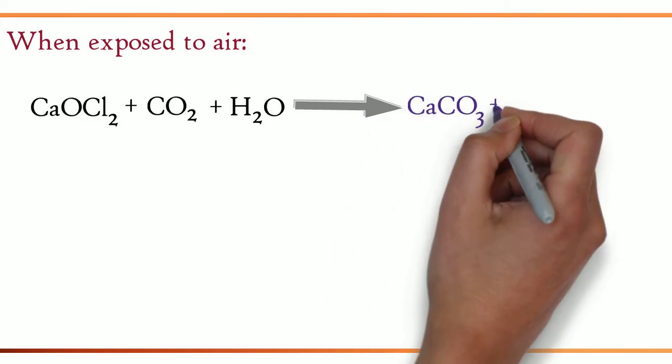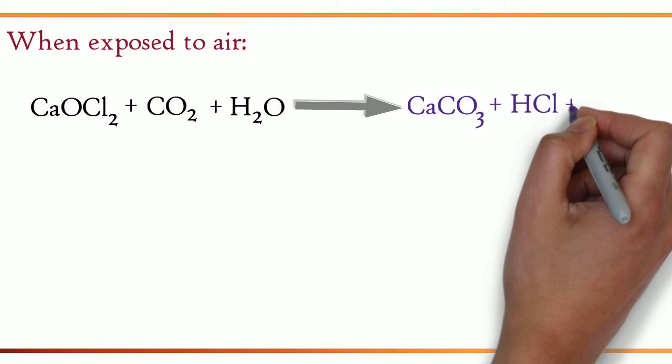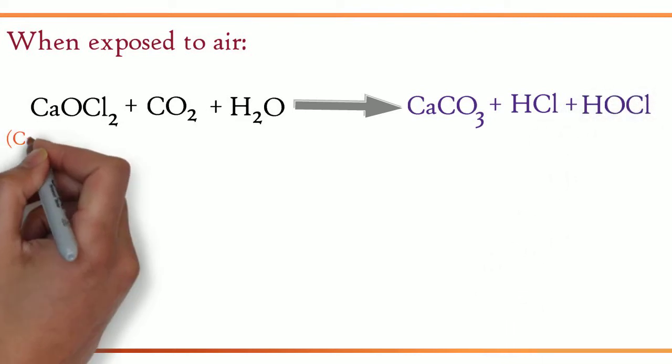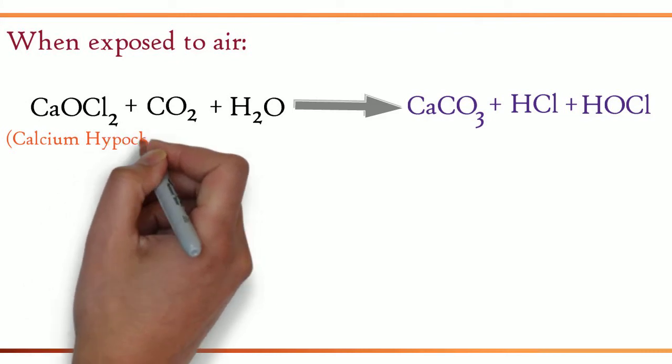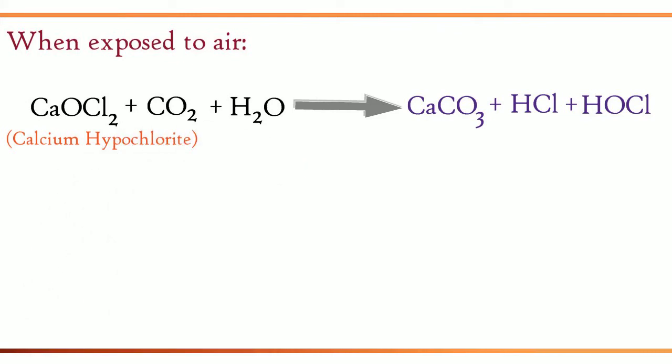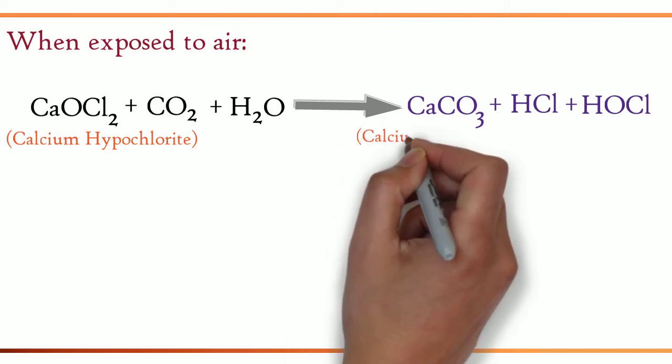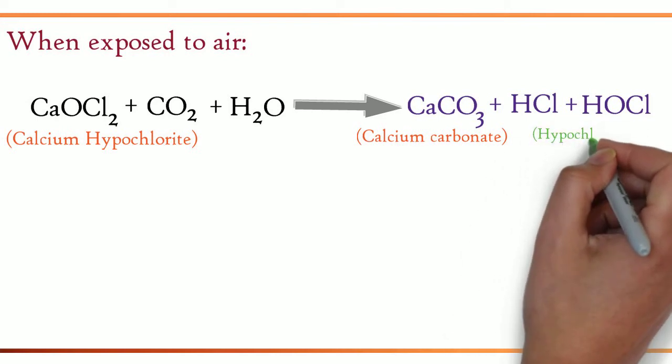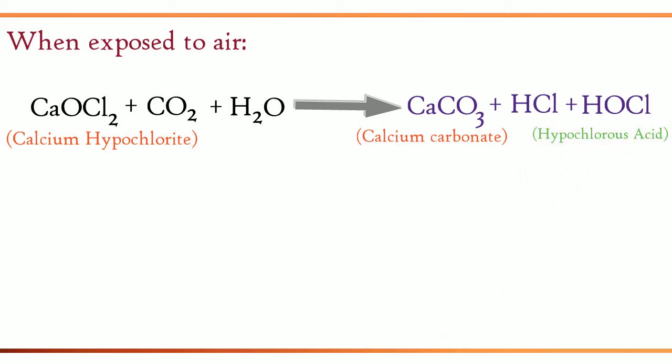CaCO3 plus HCl plus HOCl. When calcium hypochlorite reacts with atmospheric carbon dioxide and water, it produces calcium carbonate, hydrochloric acid, and hypochlorous acid.